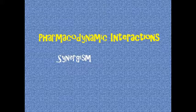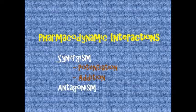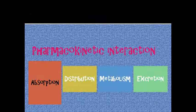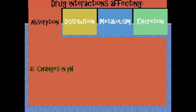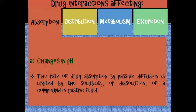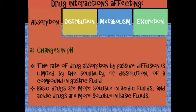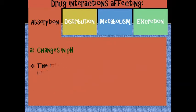Next is pharmacodynamic interactions, which may include synergism, potentiation, addition, and antagonism. The first type of drug interactions affecting absorption is changes in pH. The rate of absorption by passive diffusion is limited by the solubility or dissolution of a compound in gastric fluids. Basic drugs are more soluble in acidic fluids, and acidic drugs are more soluble in basic fluids. These interactions can be clinically significant.